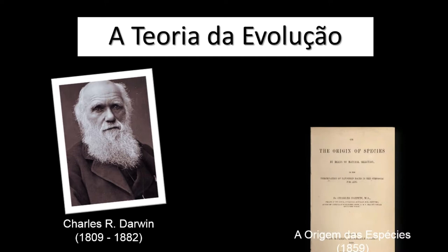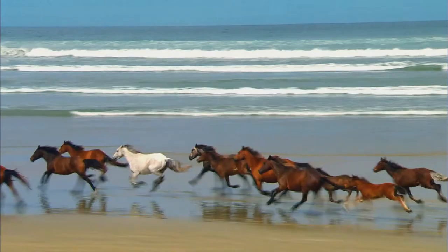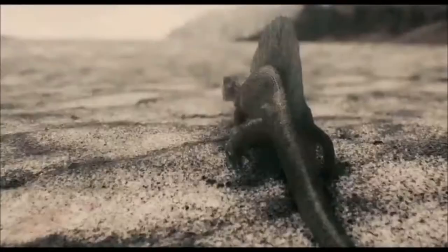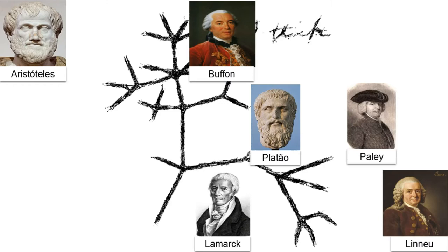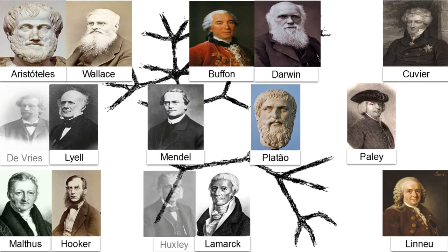A Teoria da Evolução de 1859 explica a biodiversidade global por meio da seleção natural, a mudança de características dos seres vivos que é passada de geração a geração. Vários foram os colaboradores para a teoria e, mesmo depois de publicada, vários nomes continuaram a adicionar contribuições para solidificá-la ainda mais. Agora, iremos conhecer o principal responsável pelo campo da estatística moderna.